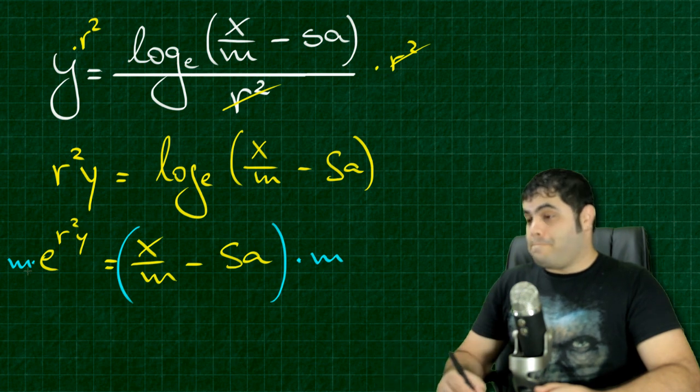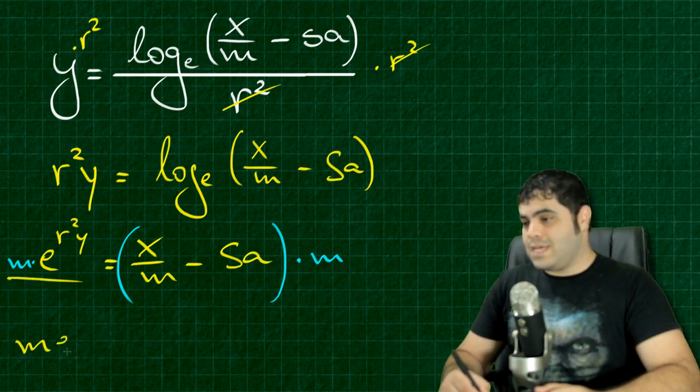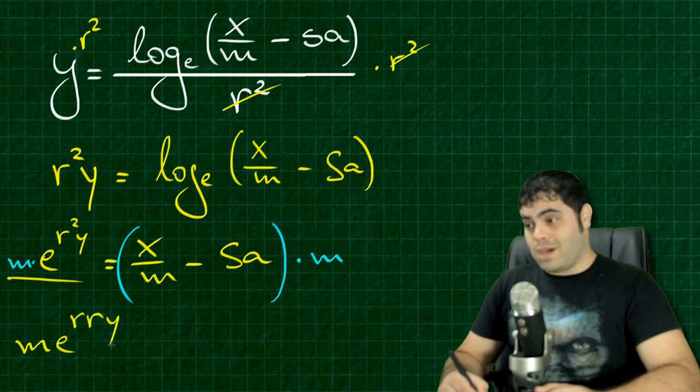So here I have Mary. Can you read this? Mary. So M E to the R times R times Y, Mary, is equal to what?